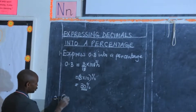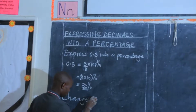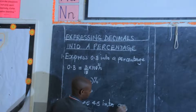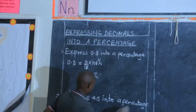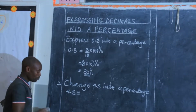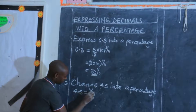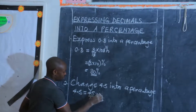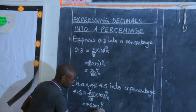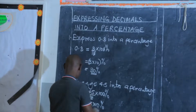Let's have another example: change 4.5 into a percentage. 4.5 — how many digits do we have after the decimal point? One. So if it is 1 digit, it is out of 10, giving us 45 out of 10. Then we multiply by 100%: cancel the 10 with a zero of 100, remaining with 45 times 10, and this gives us 450 percent.